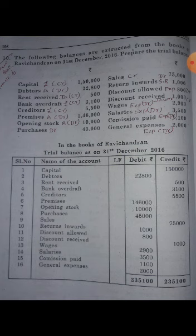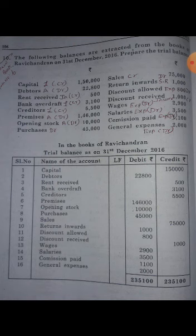The following balances are extracted from the books of Ravichandran on 31st December 2016 to prepare the trial balance. In the books of Ravichandran, we are going to check whether the transactions are entered correctly, and whether all the ledger balances show correctly as debit balance or credit balance, so we can check the accuracy of the accounts.